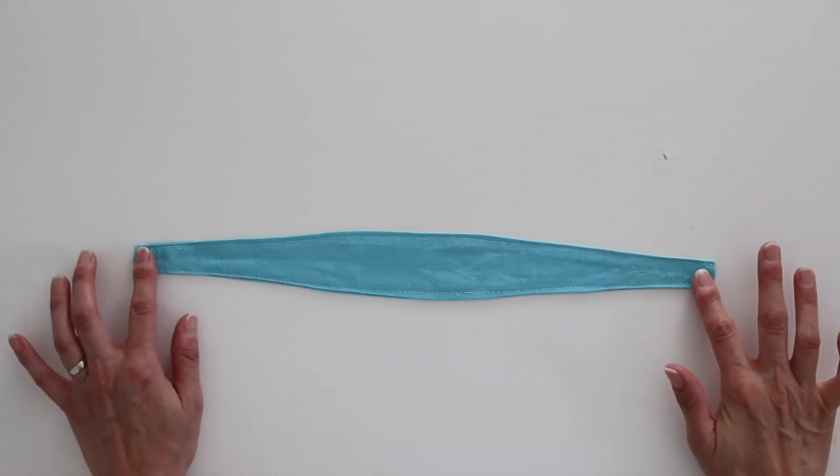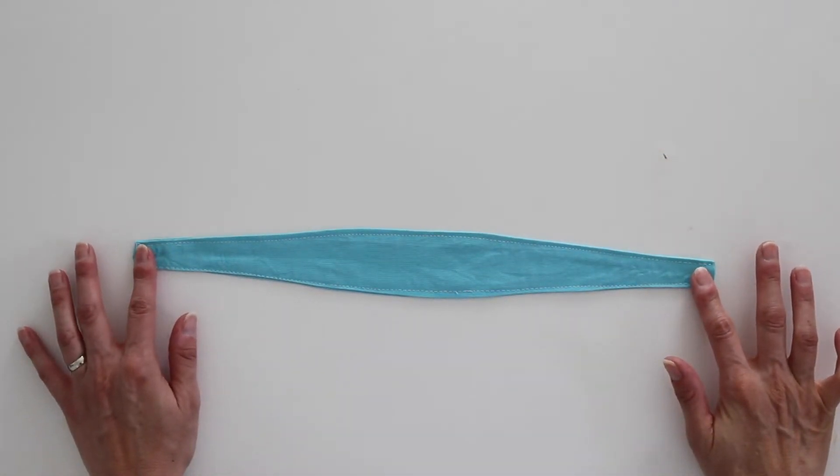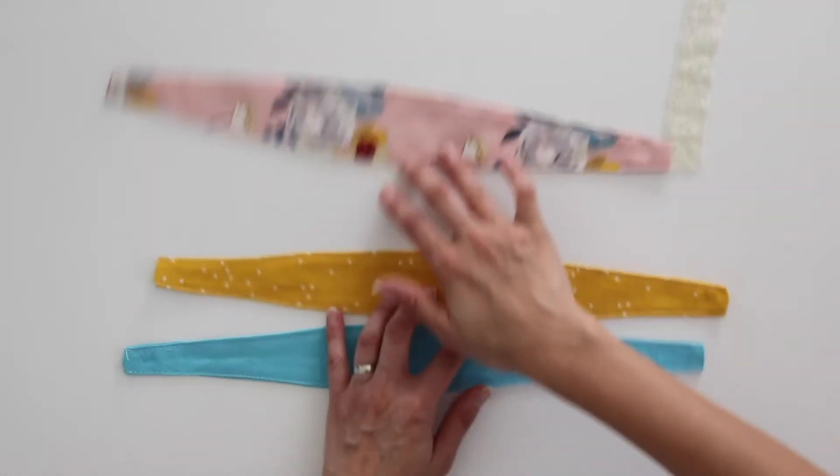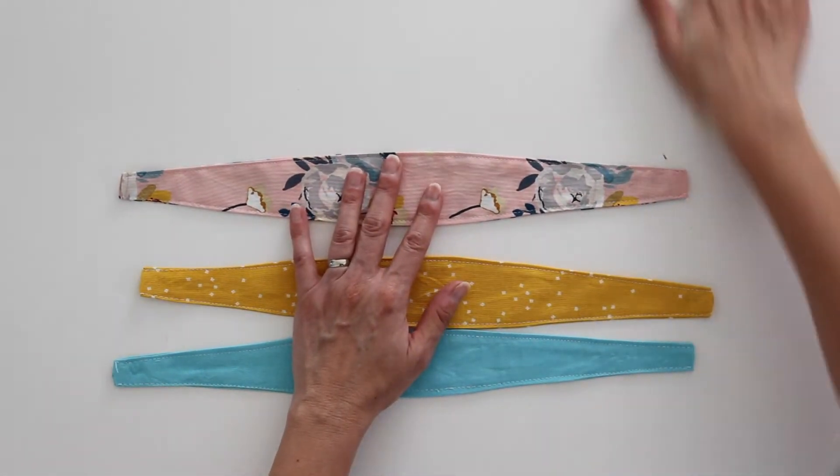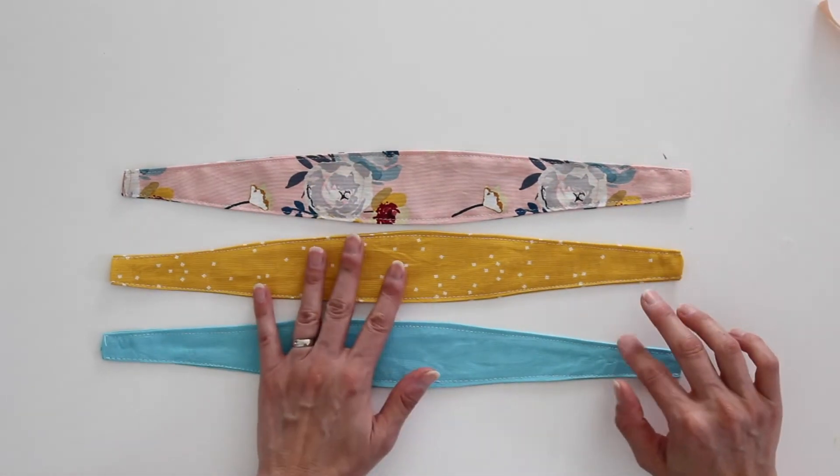So here's what that looks like after it is top stitched. And now with my three different headbands here, I'm going to be showing you three different ways to put the elastic on them.